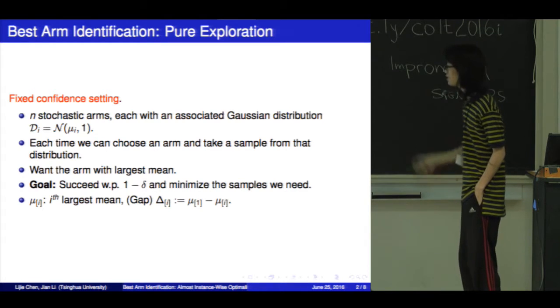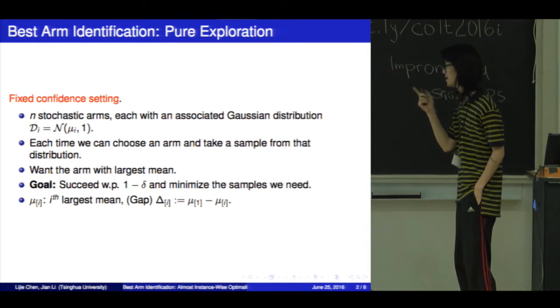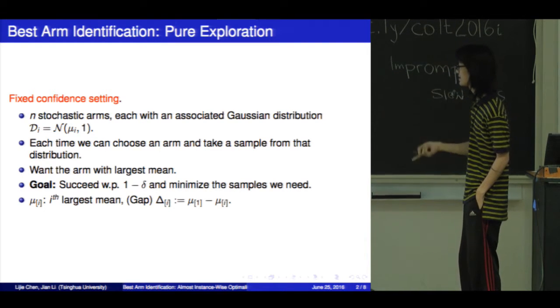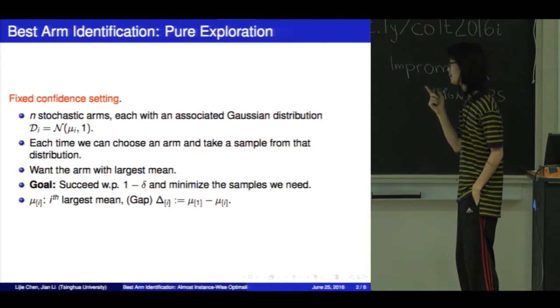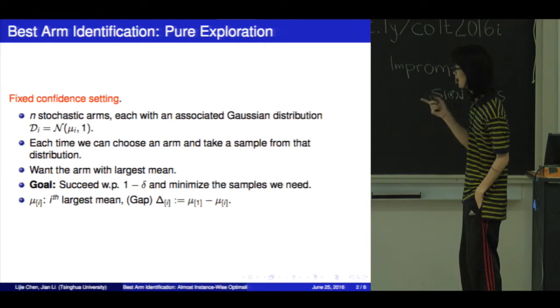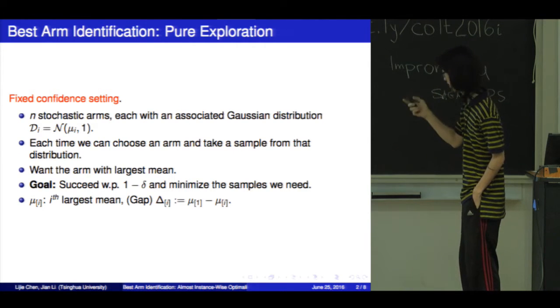We define mu_i to be the largest mean, and the gap_i is mu_1 minus mu_i.